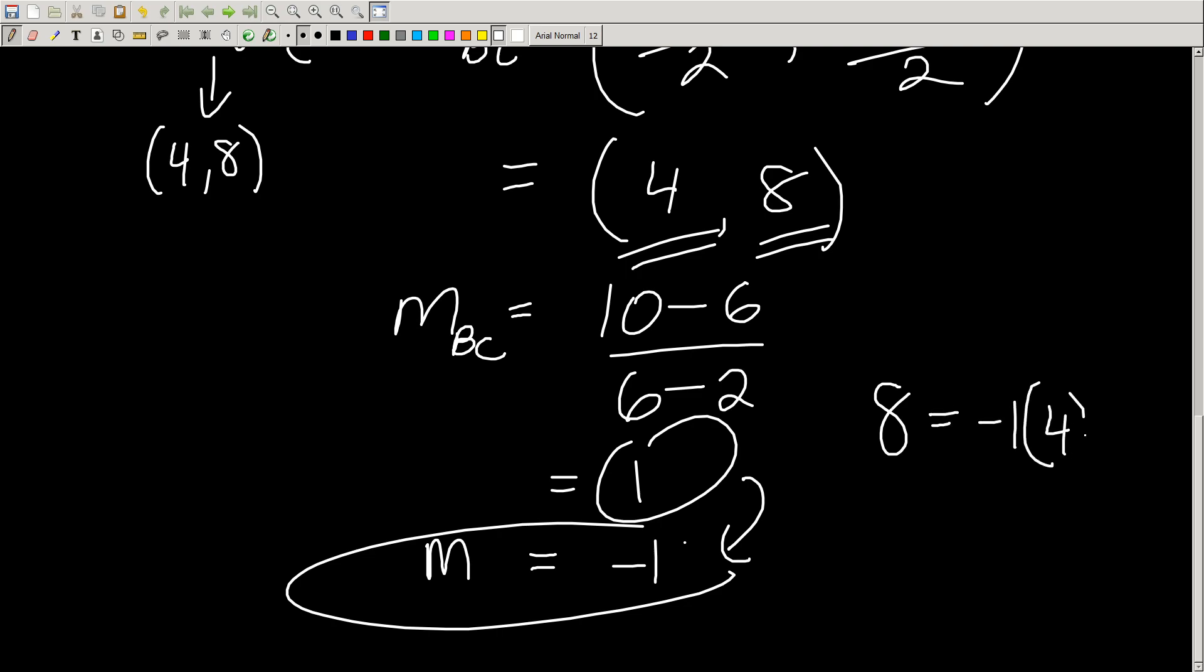Guess what you're going to do? You're going to find the y-intercept. 8 equals negative 1 times 4 plus b. All I've done is I've plugged it into y equals mx plus b. And what do you get? Negative 4 plus b equals 8.